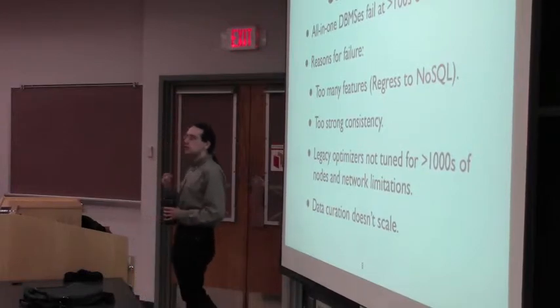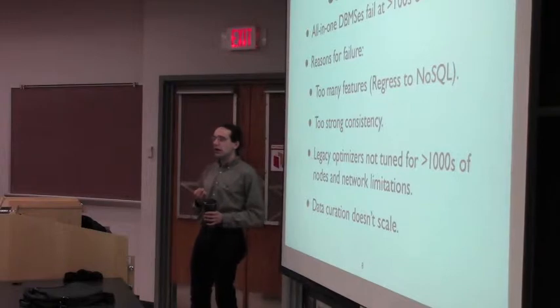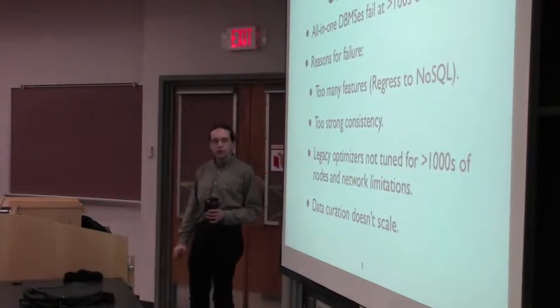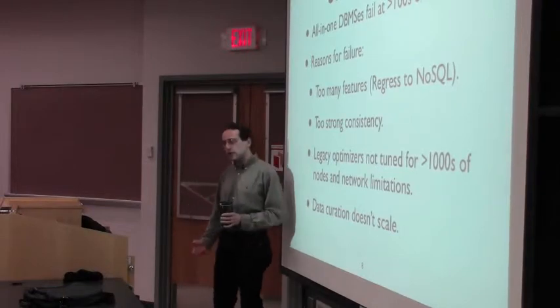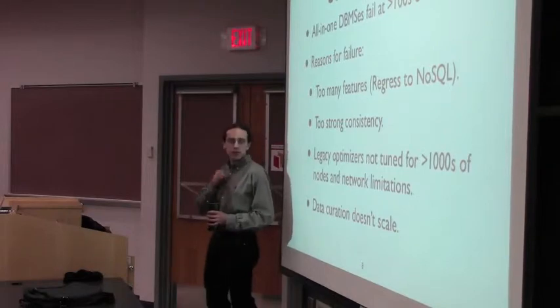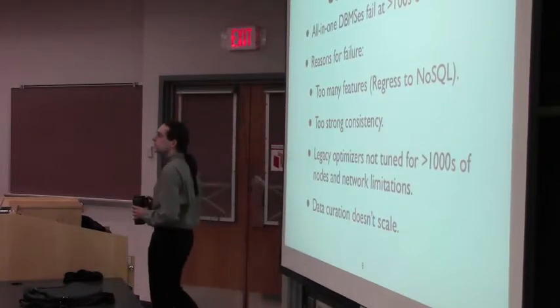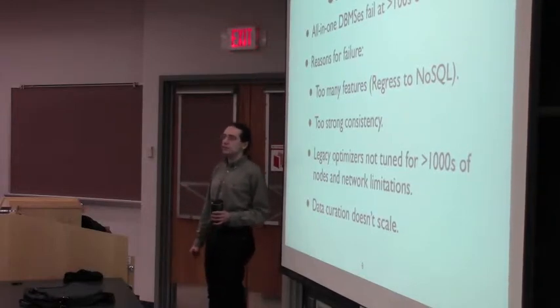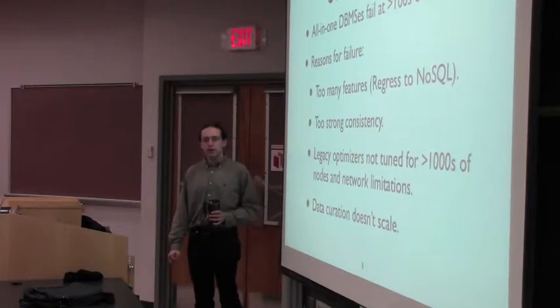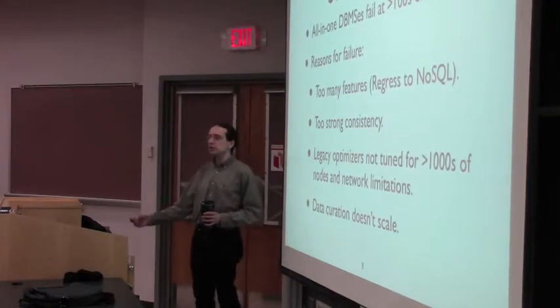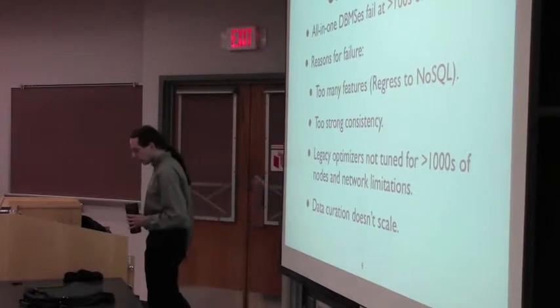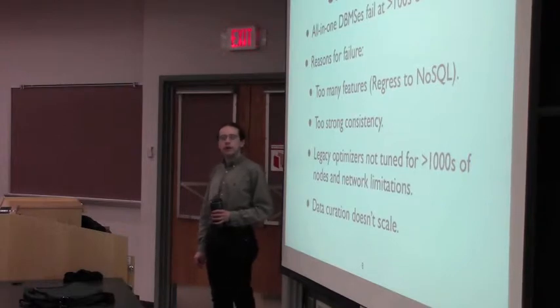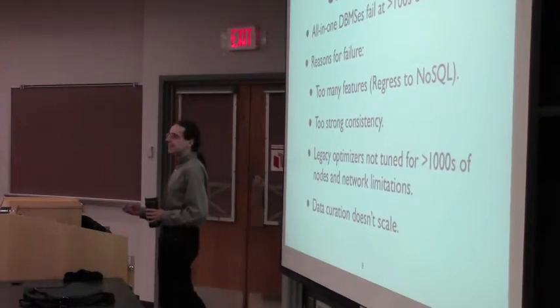So databases have traditionally provided the ACID guarantees that I talked about last week. And typically, providing ACID guarantees is incredibly, incredibly expensive. And this is sort of more my opinion than anything else. But there's also this question of the structure of the data. So relational databases typically have a very strong consistency, want users to place very strong consistency guarantees on their data. They like things like foreign keys and well-structured data.